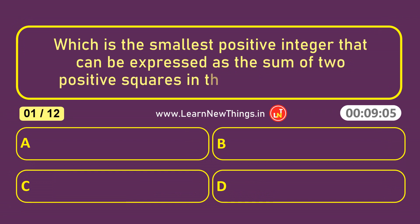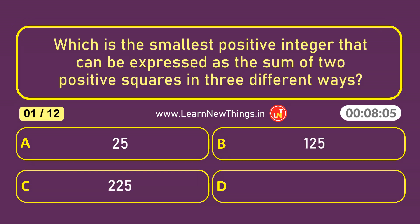Which is the smallest positive integer that can be expressed as the sum of two positive squares in three different ways? 325.